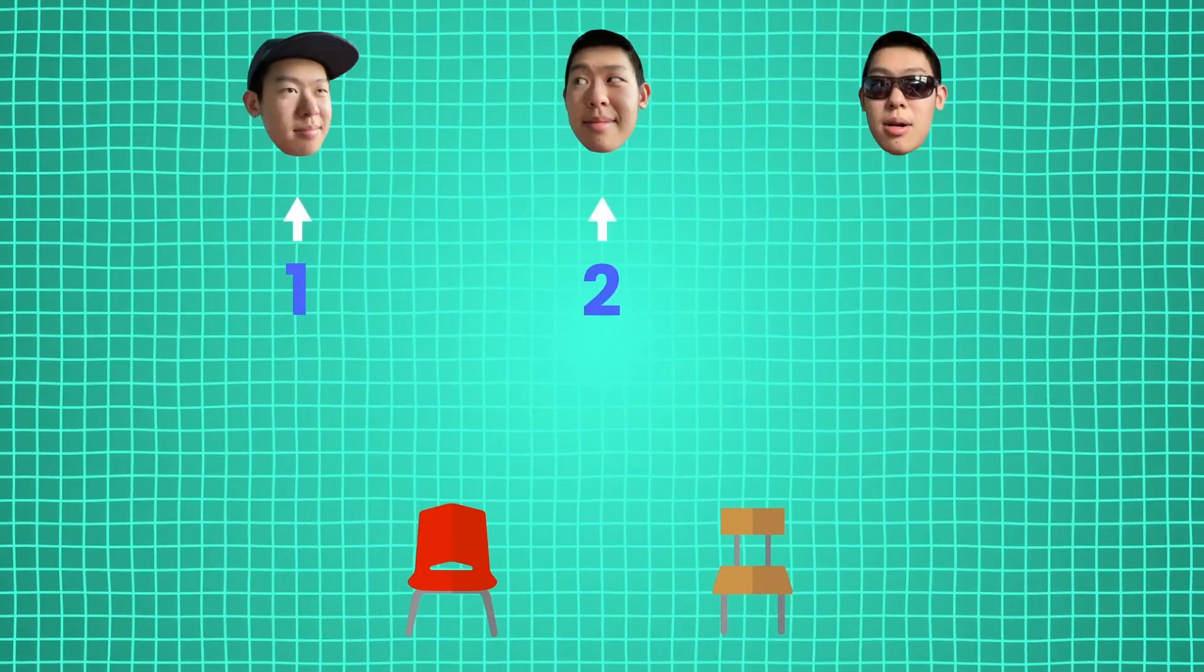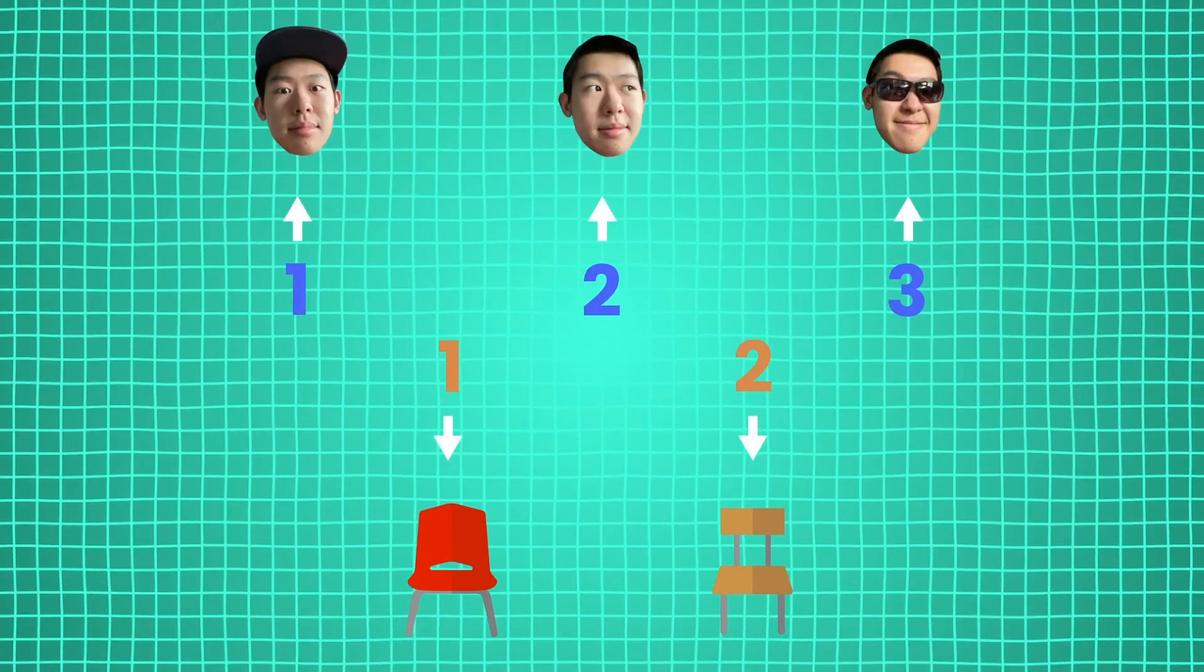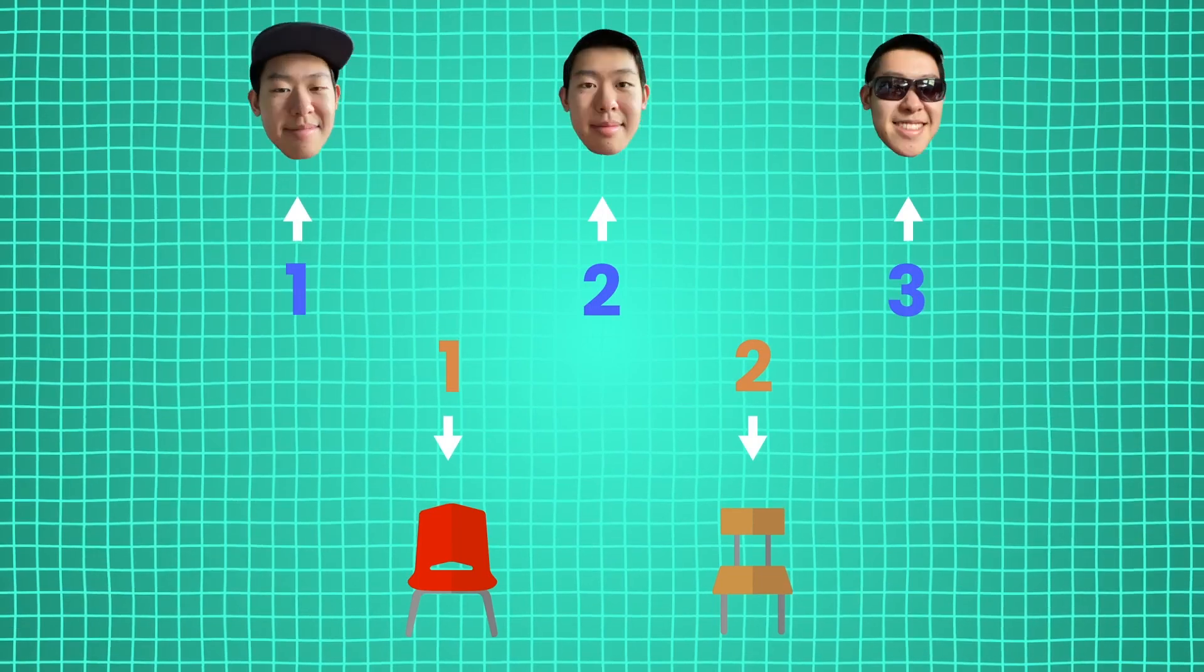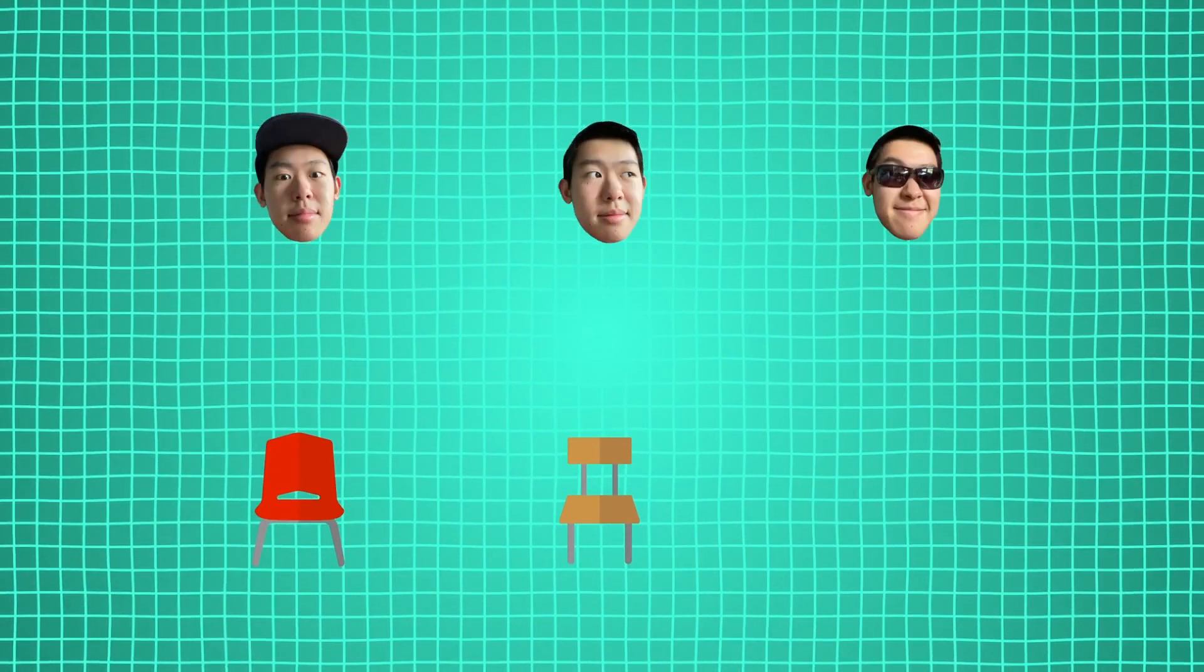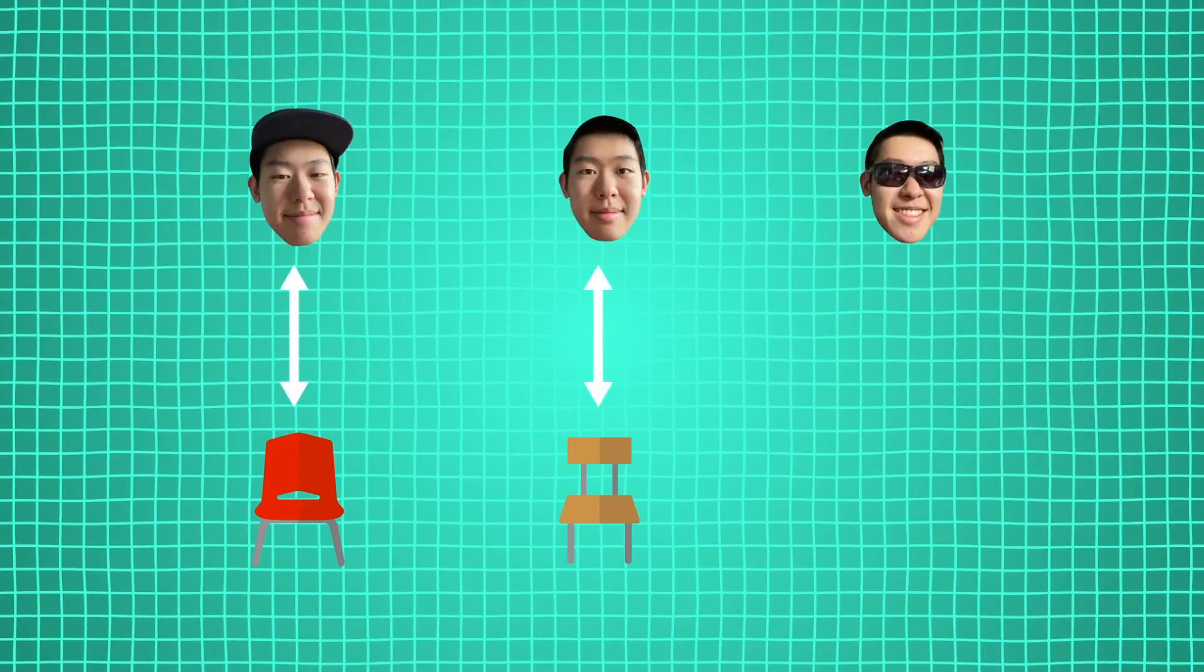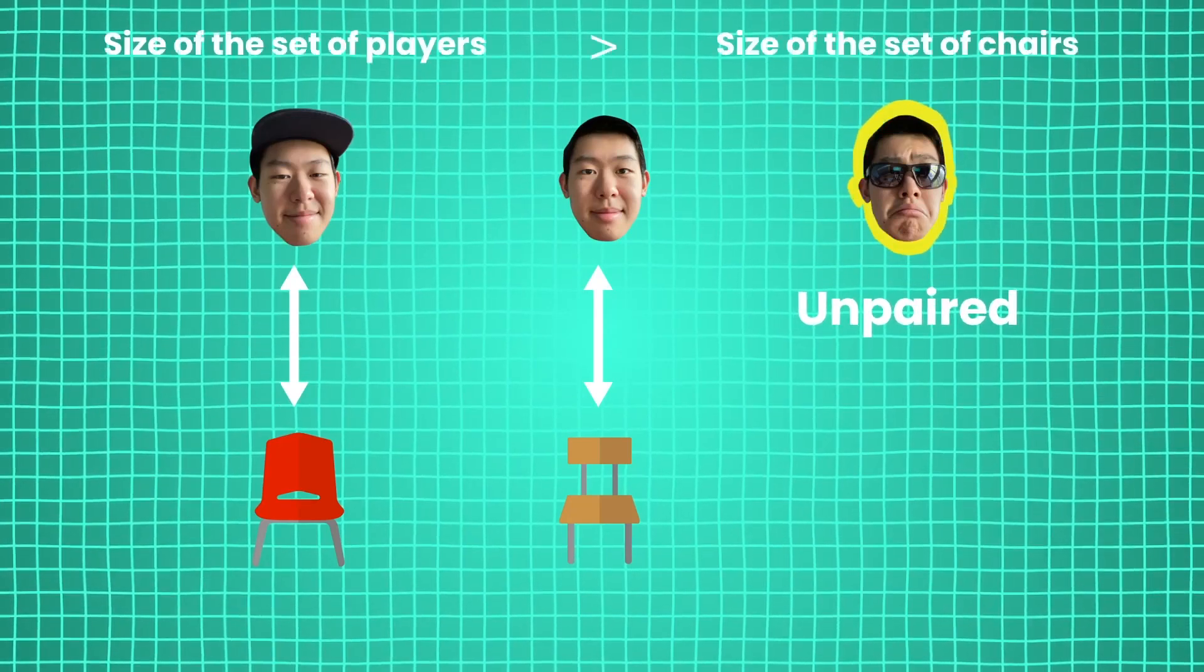We could count the players and then the chairs separately to verify that there are more players than there are chairs, or we can cut out the middleman. The act of sitting uniquely pairs each player to exactly one chair, except for one unlucky loser. Since we have an unpaired player, we know that there must be more players than there are chairs, without even counting.